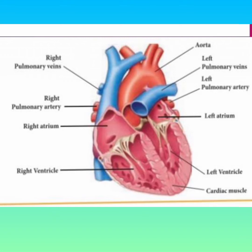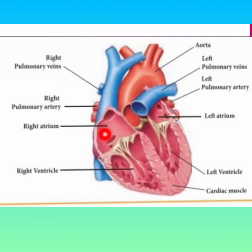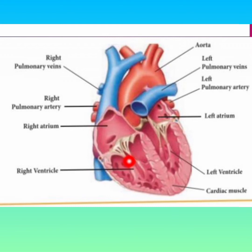The heart is divided into four chambers. The two upper chambers are called the atrium — the right atrium and the left atrium. The two lower chambers are the ventricles.